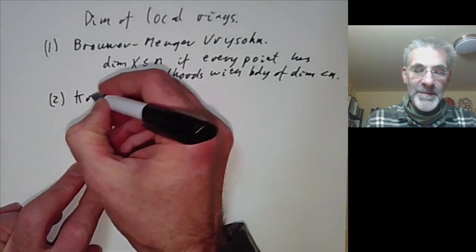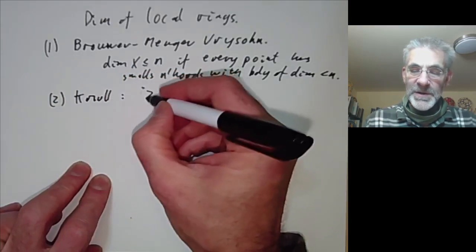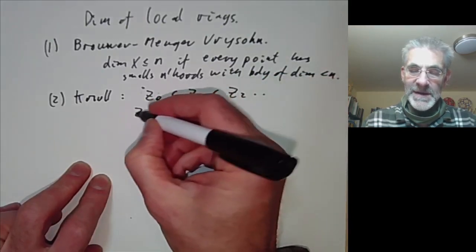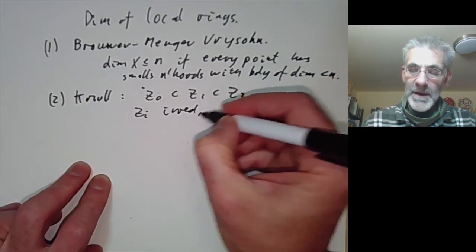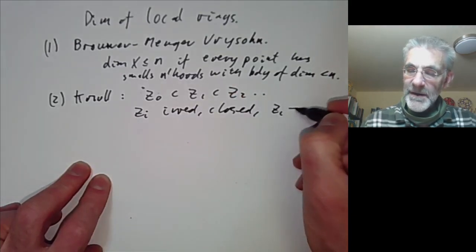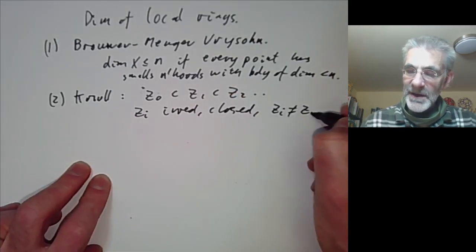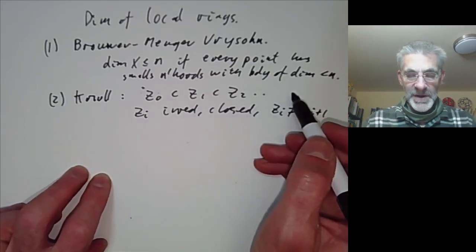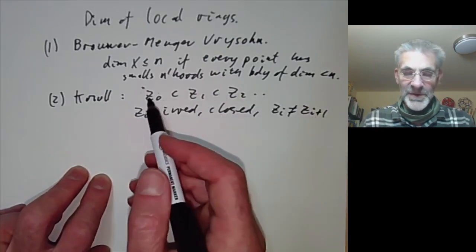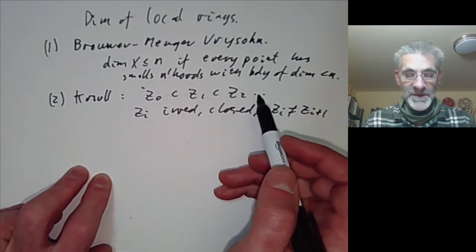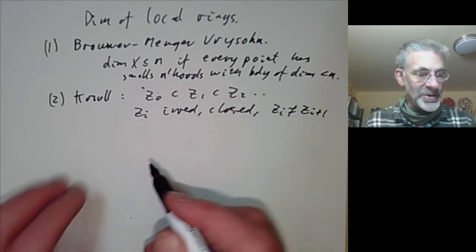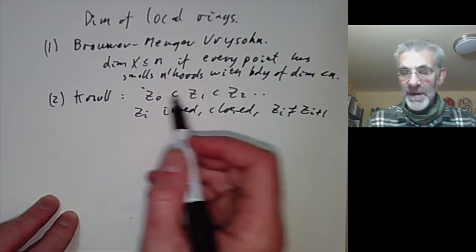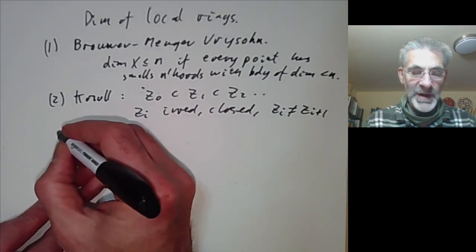Then we have the Krull dimension, where you look at chains of irreducible closed subsets where Z_i is irreducible closed and Z_i is not equal to Z_{i+1}. The supremum of the length of such chains is the dimension. The dimension of a local ring is defined as the Krull dimension of its spectrum of prime ideals.